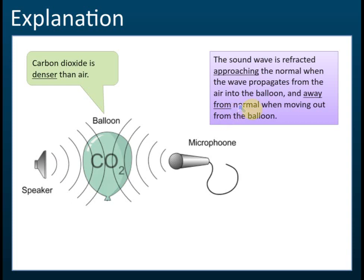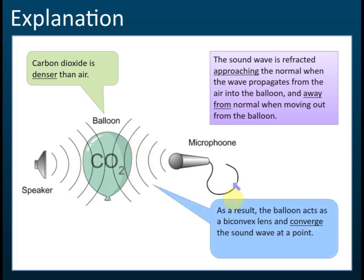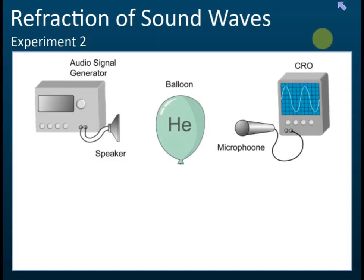When the wave moves out from the balloon, it bends away from the normal. As a result, the sound wave is converged to a smaller area, so the amplitude becomes higher and the microphone detects a higher amplitude of the sound.